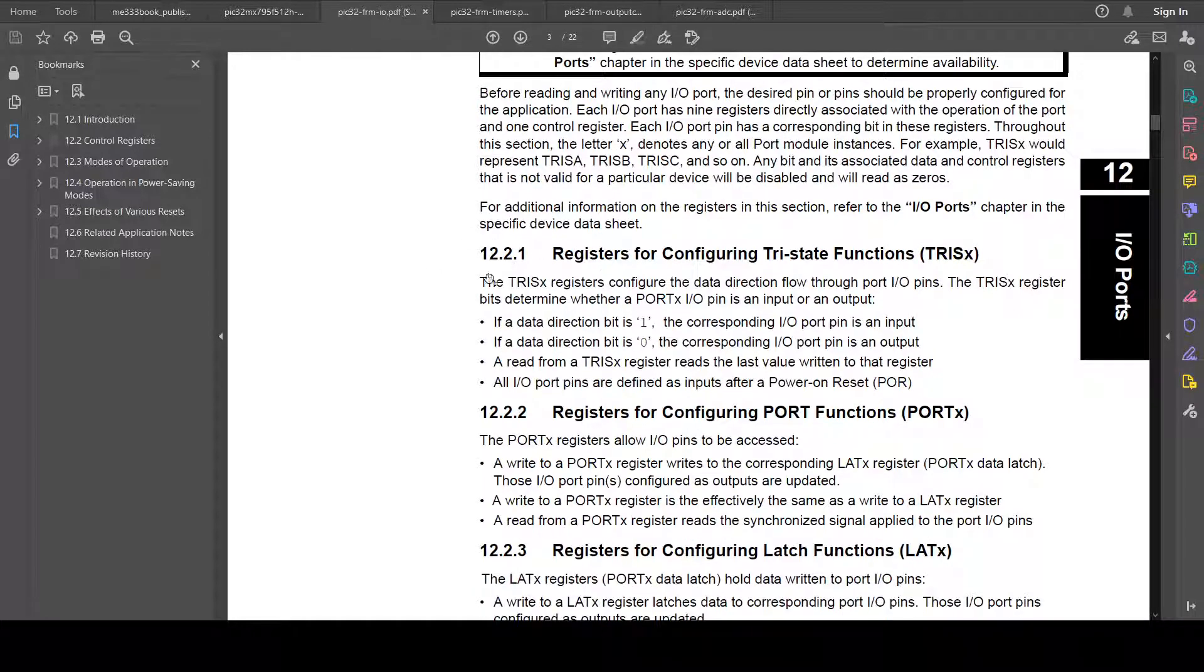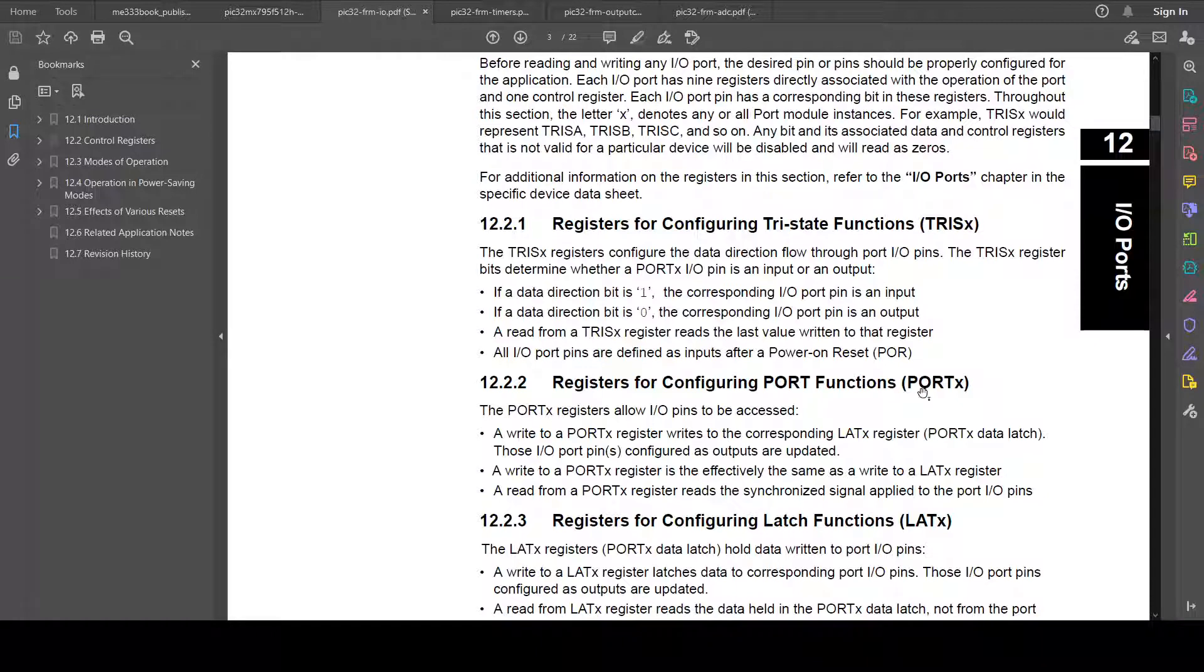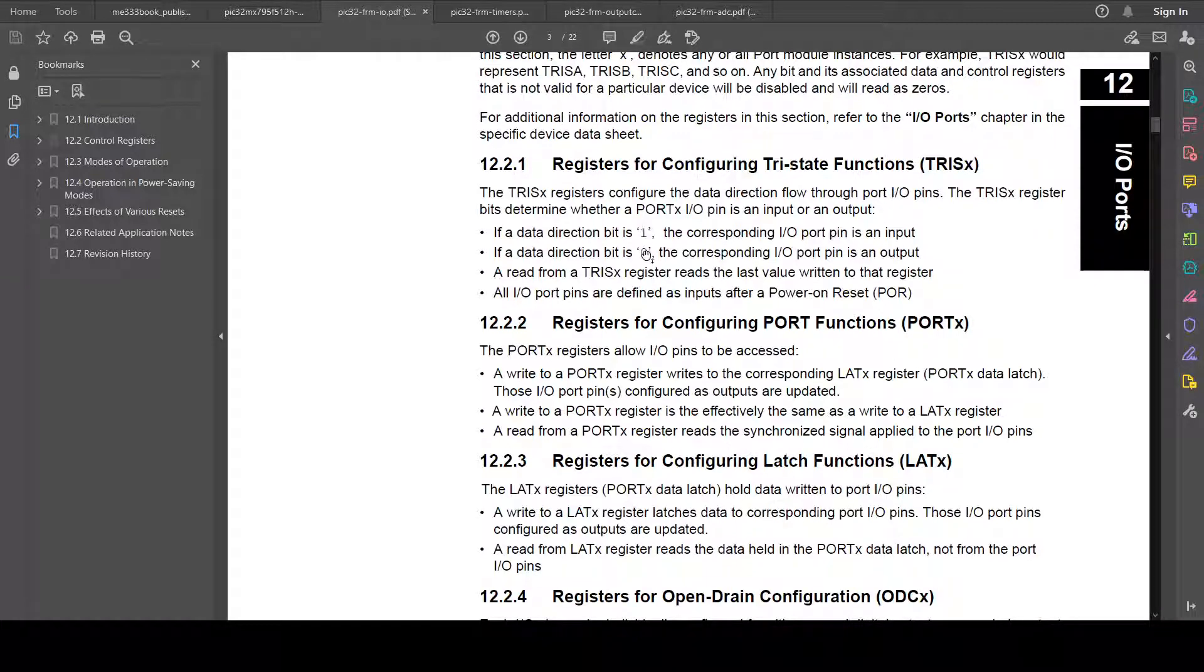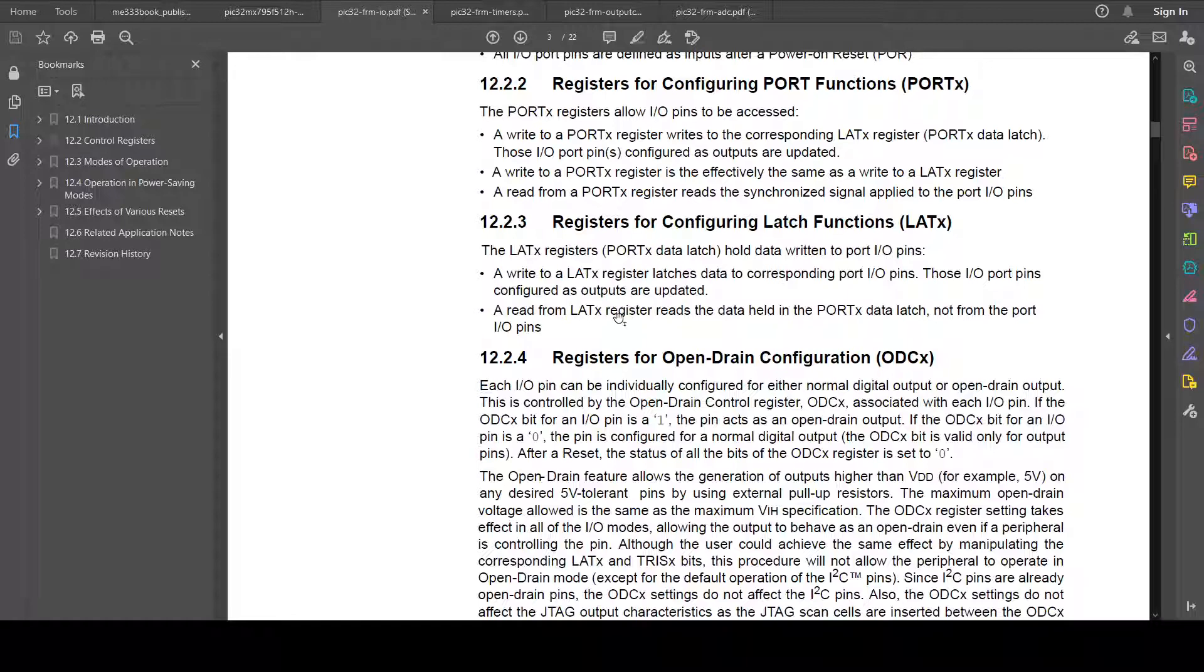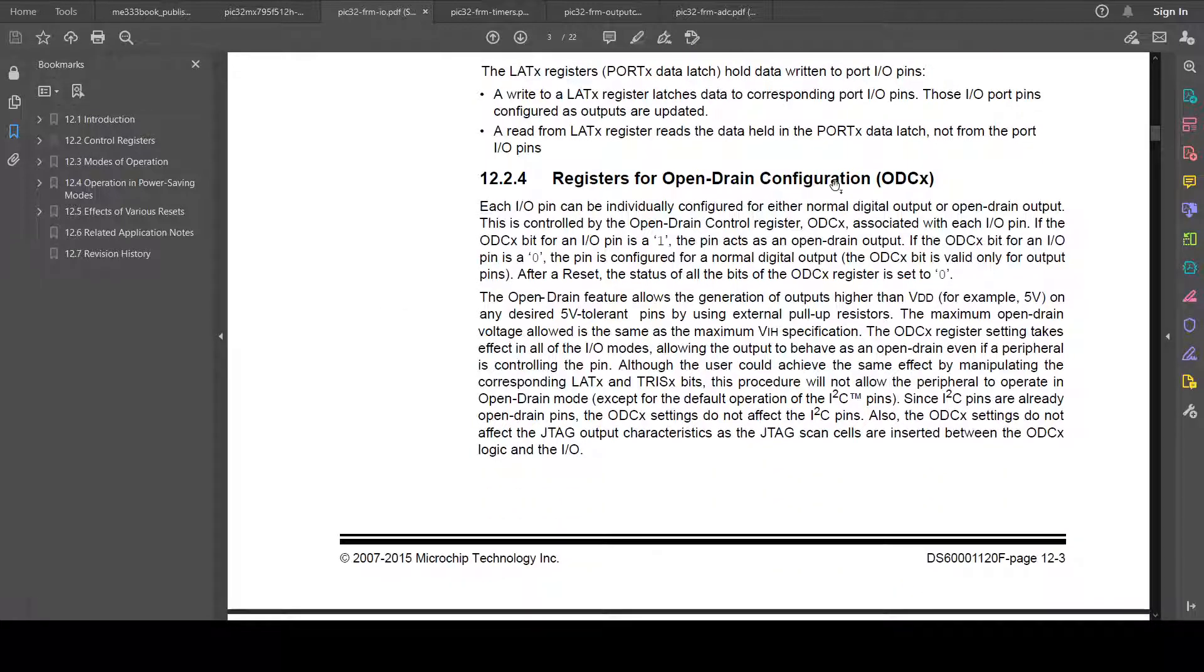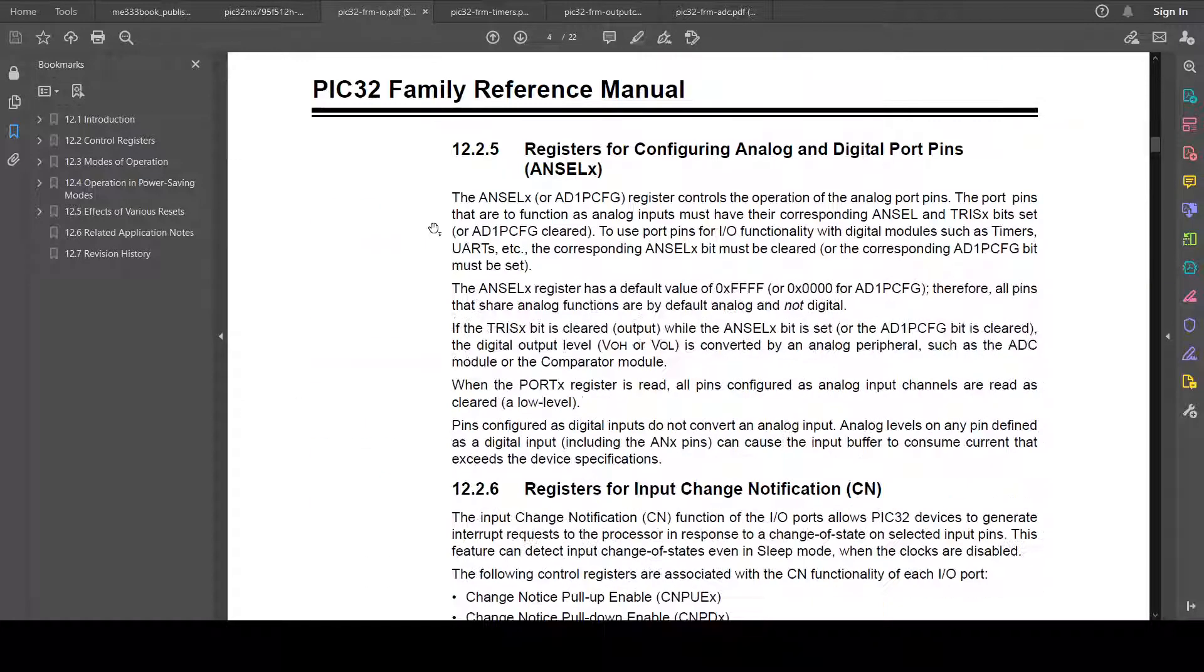So how do we read the family reference manual? Well, it starts out with the same block diagram and kind of the pitch, the sales pitch for why do you want this peripheral on the PIC. Now, every microcontroller out there is going to have digital I/O pins, so nothing special there. But we have some key features. The outputs can be open-drain. We'll talk about what that means. You can have a pull-up resistor turned on. They have set, clear, and invert versions of the SFRs. We've seen that before. But that's kind of special to the PIC, having these atomic registers.